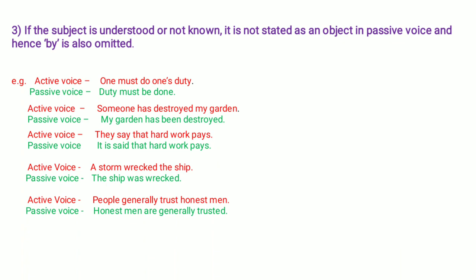Another example: 'They say that hard work pays.' 'They' is the subject, 'say' is the verb (present tense), and 'that hard work pays' is the object phrase. Since we can't take the full phrase to the beginning, we use the pronoun 'it.' This is a present tense sentence, so we use 'is.' 'Say' becomes 'said.' The passive voice is: 'It is said that hard work pays.'